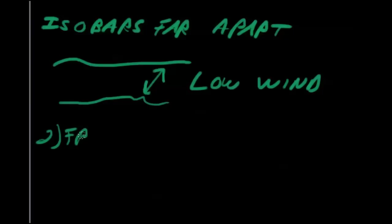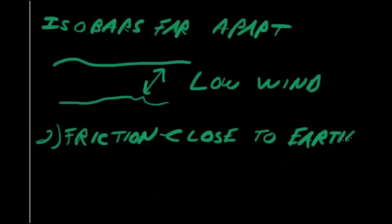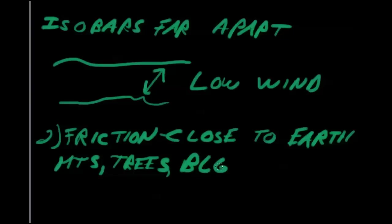And friction really occurs close to the Earth's surface. Close to Earth. You know, you think, close to the Earth's surface, what would slow down the wind? Oh, you could have mountains, you could have trees, buildings could be in there. You know, anything which is going to slow the wind down.